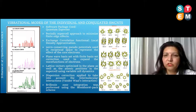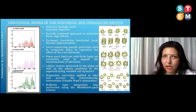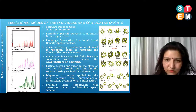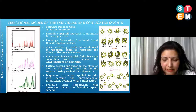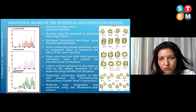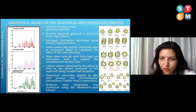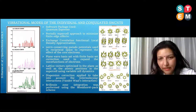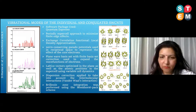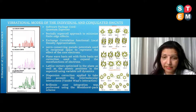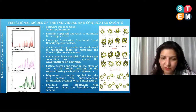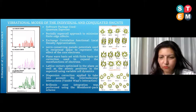The exchange-correlation functional used was the local density approximation (LDA), whereas all earlier studies used GGA (generalized gradient approximation). Norm-conserving pseudopotentials were used in reciprocal space to treat the effect of core electrons. A plane-wave basis set with finite basis set correction was used to expand electron wave functions, and the lattice vectors and atomic positions were optimized. Dispersion correction was also applied to account for van der Waals intermolecular interactions, and Brillouin zone integration was performed using the Monkhorst-Pack scheme.